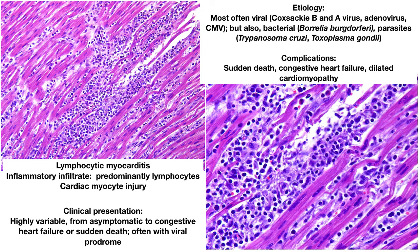These two images are from a patient with lymphocytic myocarditis. Lymphocytic myocarditis is most commonly viral in origin — for example, Coxsackie B and A viruses, adenovirus, CMV, and many others — but can also be a feature of bacterial infection, for example Borrelia burgdorferi causing Lyme disease, or parasites such as Trypanosoma cruzi or Toxoplasma gondii.